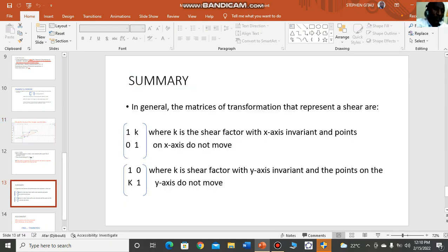I would like us to look at the summary here. In general, a shear may be represented by the matrix [1,0; K,1], where K is a shear factor with x-axis invariant, and the points on x-axis do not move. There is another form of a shear, where we have [1,K; 0,1], where K is a shear factor with y-axis invariant, and points on y-axis do not move.